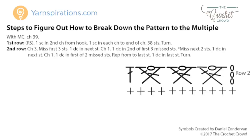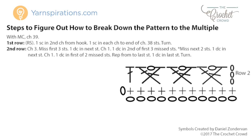Now we have row one and two complete, but something is missing — the starting chain. When reading back to row number one it stated one single crochet second chain from the hook. That means there is one chain that is like a builder in this row. The second chain from the hook is actually under the first single crochet, and the first chain is beside the single crochet in row one — it's like the builder. To complete the rest of this diagram you need to put one chain under each stitch all the way back to the very beginning.